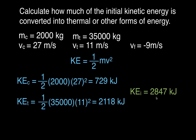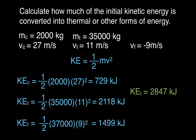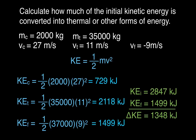Adding those two values together, the total initial kinetic energy before the collision is 2,847 kilojoules. After the collision, using one-half times the combined mass of 37,000 kg times the final velocity squared (rounding 8.95 to approximately 9 m/s), the kinetic energy after is 1,499 kilojoules. Subtracting KE_after from KE_before gives a change in kinetic energy of 1,348 kilojoules — energy lost to deforming the vehicles, sound, heat, and molecular vibrations.